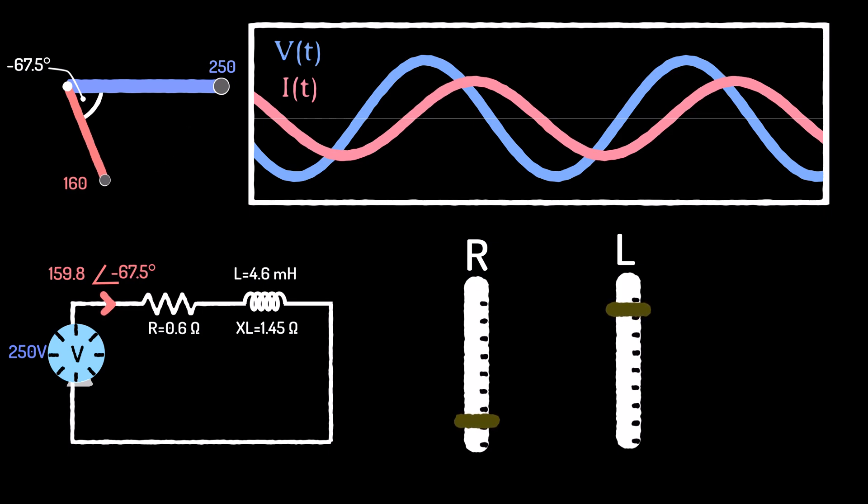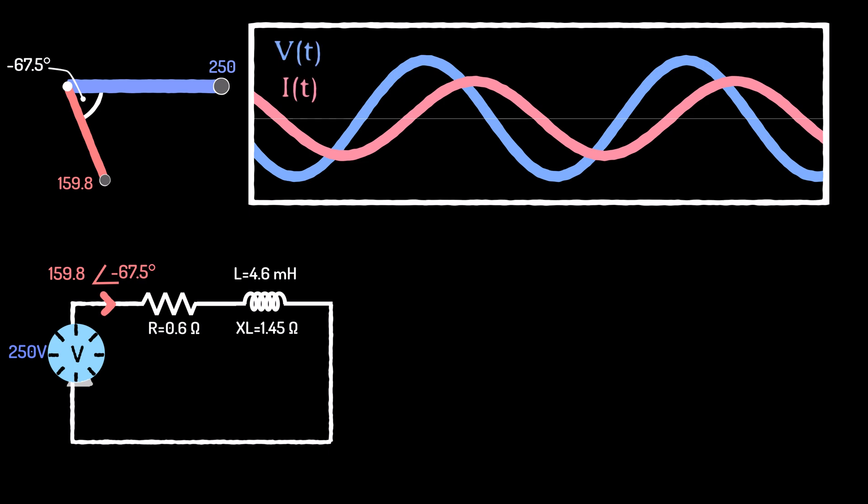And this brings us to the first major advantage of using the phasor representation. The relationship between the voltage and current phasors can be intuitively linked to the impedance of the system. Incredibly,